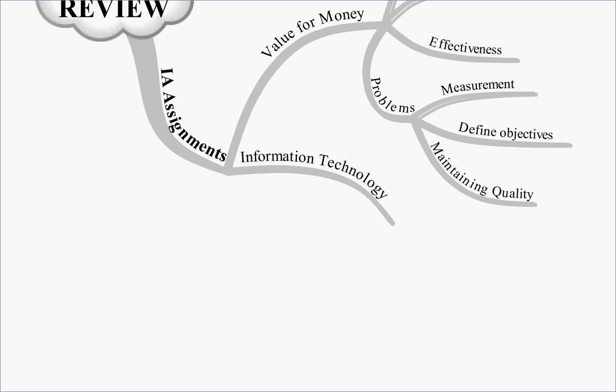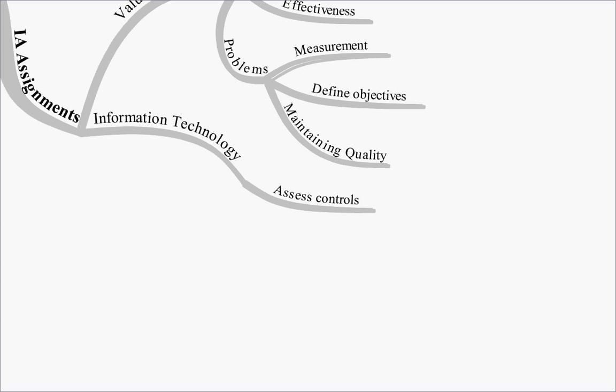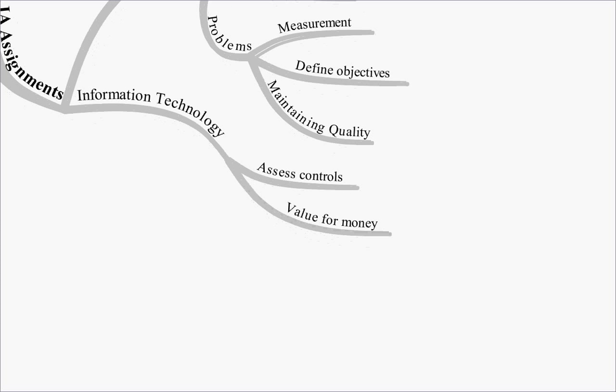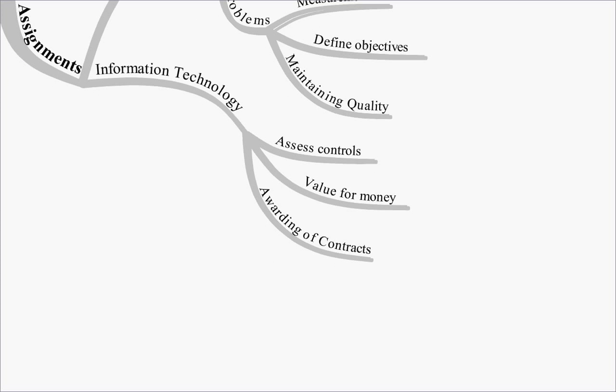So internal audit may also look at an assignment on information technology. The sorts of things they'll ask are, are the controls in place over the information technology section of the firm. Are they obtaining value for money. And a little bit about awarding of contracts. How are the IT contracts awarded. Is it a fair process. Is it a tender process. And is there any potential for fraud within it.